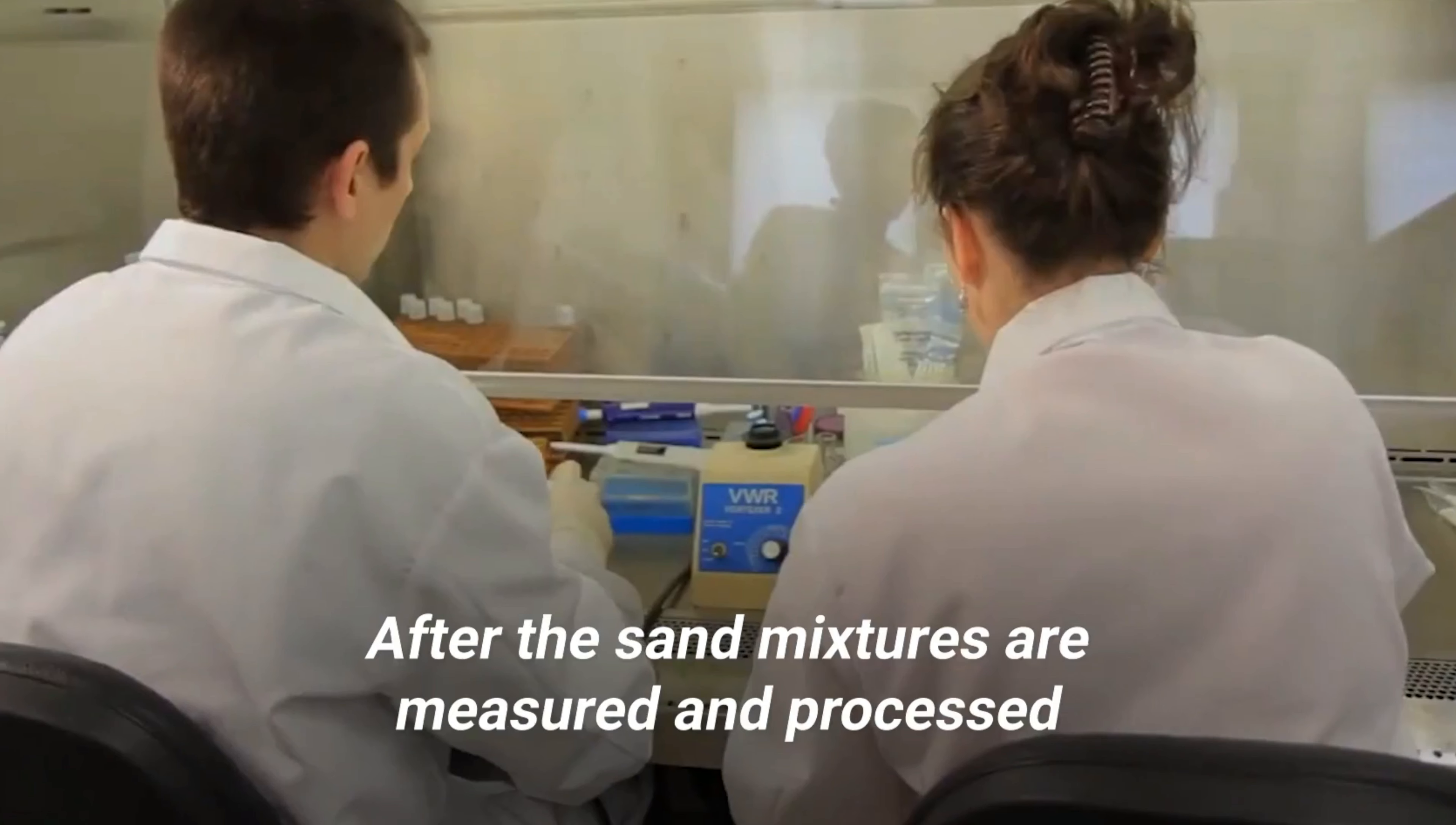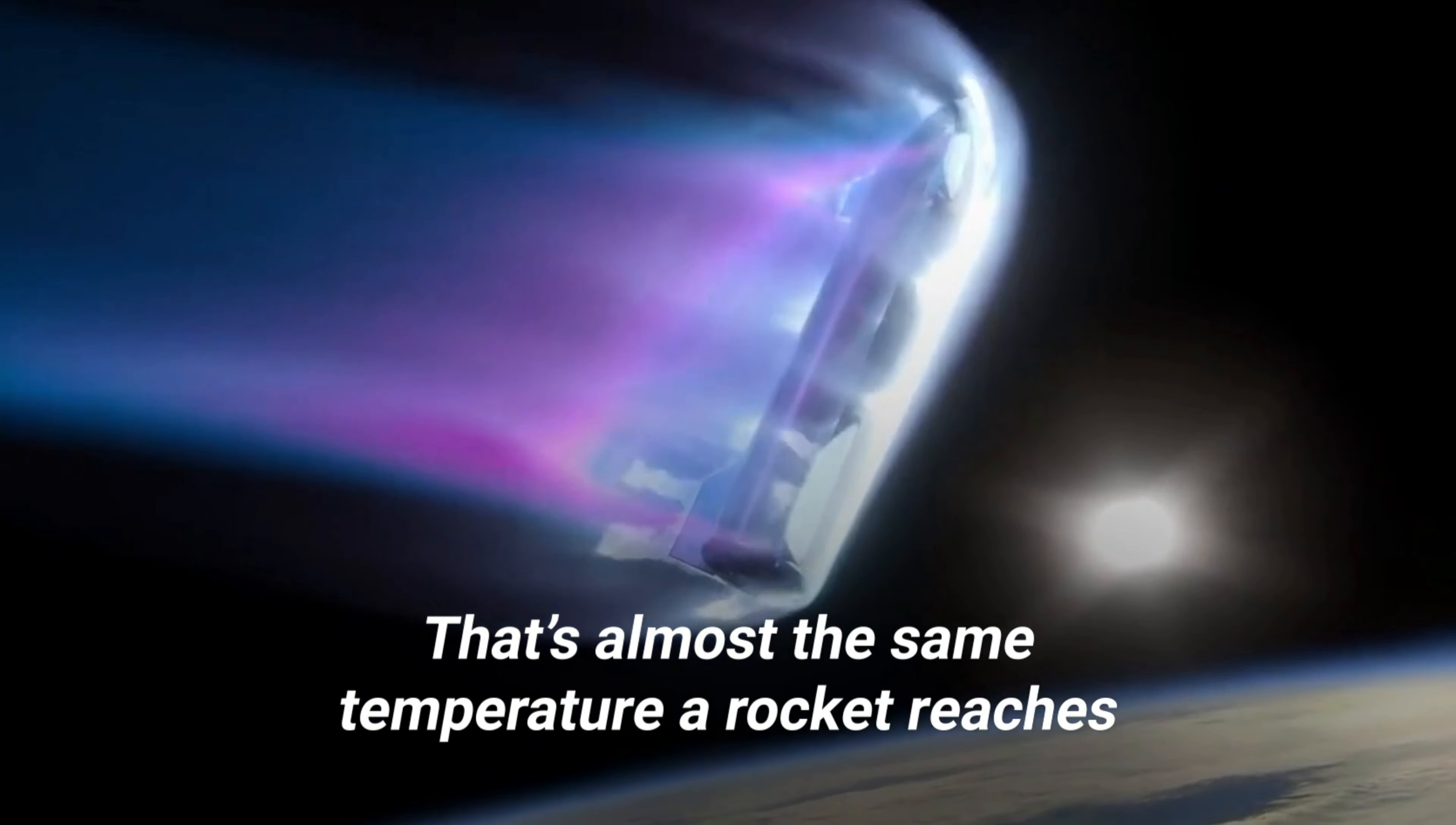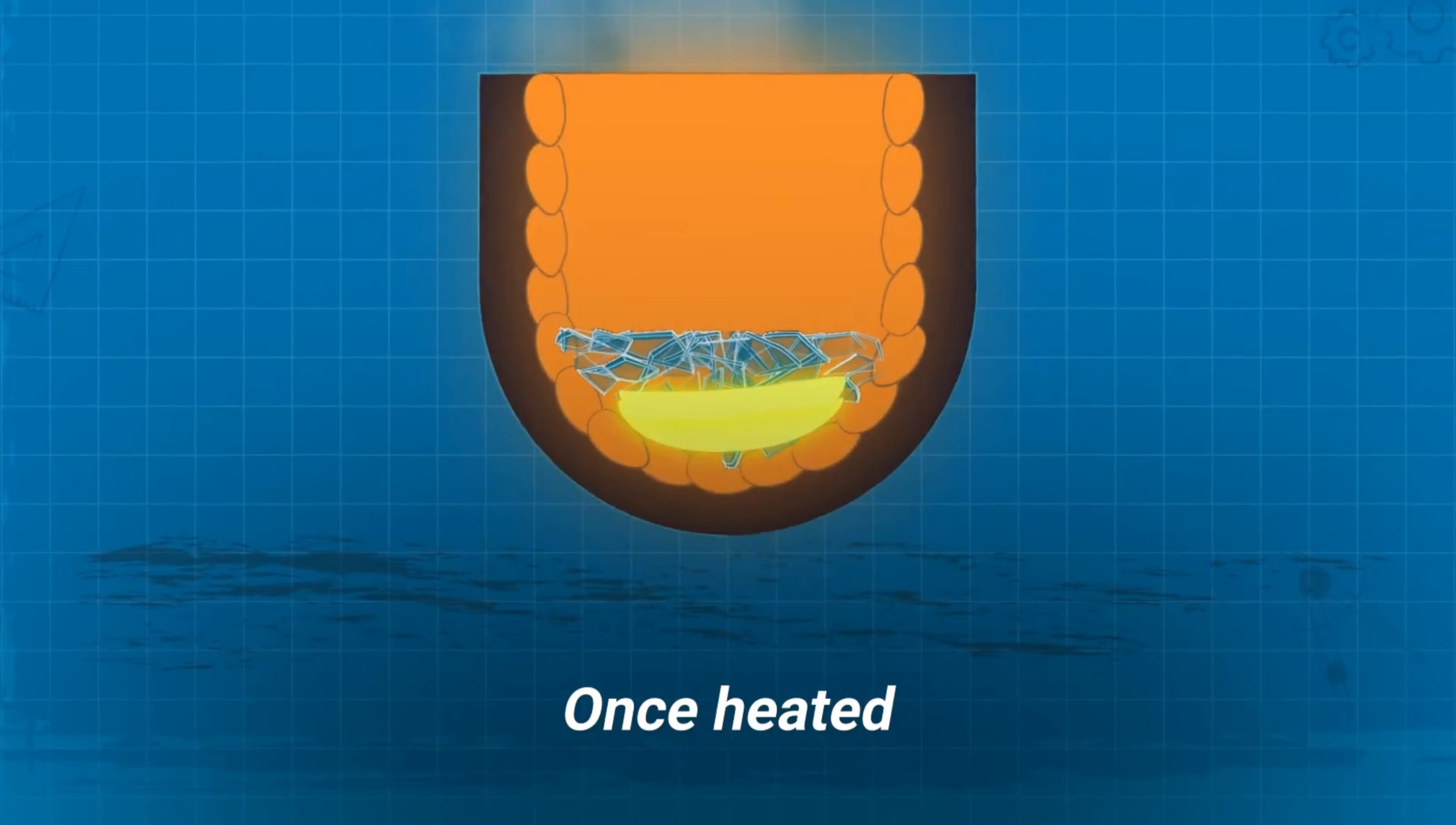After the sand mixtures are measured and processed, they're heated to extreme temperatures in a furnace, reaching upwards of 3,090 degrees Fahrenheit. That's almost the same temperature a rocket reaches as it re-enters Earth's atmosphere. Once heated, the mixture melts and turns into liquid.